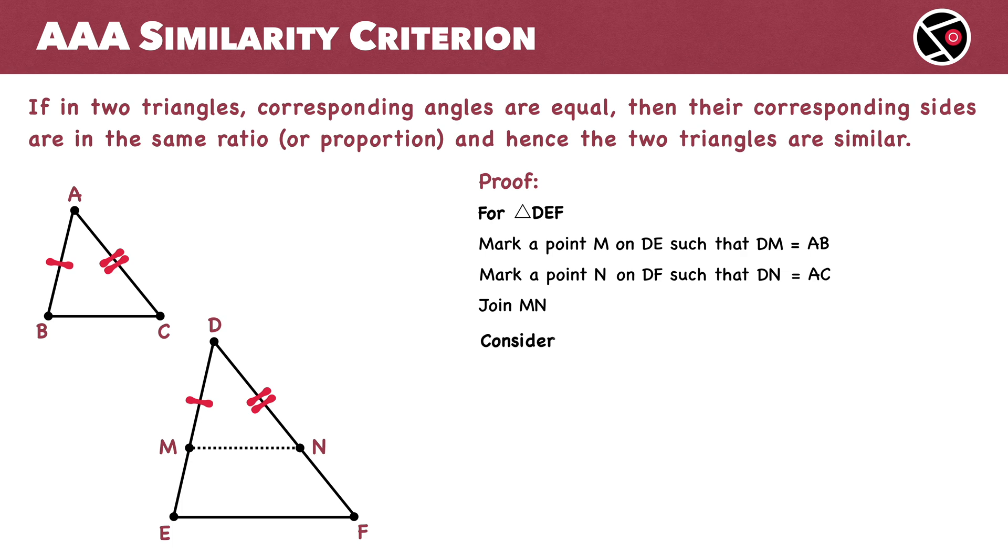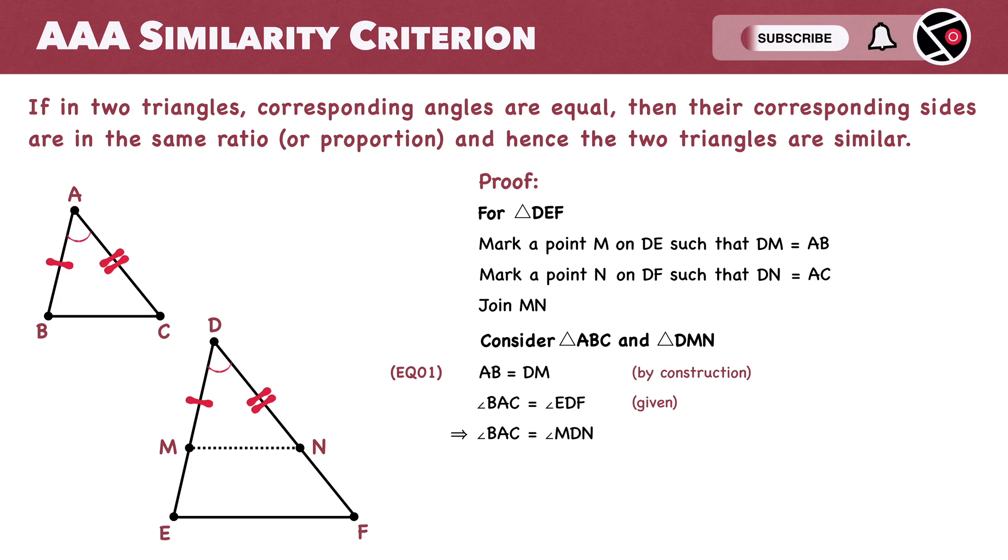Now, consider triangles ABC and DMN. AB equals DM—this is Equation 1. Angle BAC equals angle EDF. Since angle EDF and angle MDN are the same, angle BAC also equals angle MDN—Equation 2.